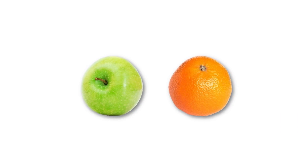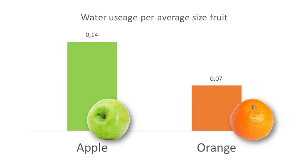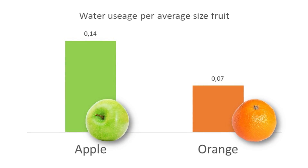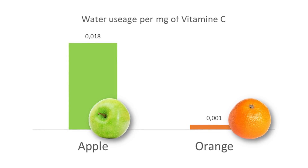To start an LCA, you first have to define the functional unit. The functional unit is a metric that allows you to compare apples with oranges. To compare the environmental impact of an apple to that of an orange, you could calculate the impact of both fruits based on a certain weight or volume, but you could also compare them on the amount of vitamin C they contain. Comparing both fruits on the functional unit of the average size of the fruit, the impact of an orange is twice as low as that of an apple. When we do the same thing but compare it on the functional unit of 1 mg of vitamin C, the impact of an orange is even 20 times lower than that of an apple.